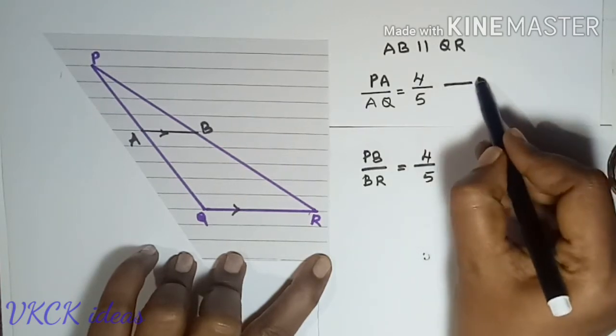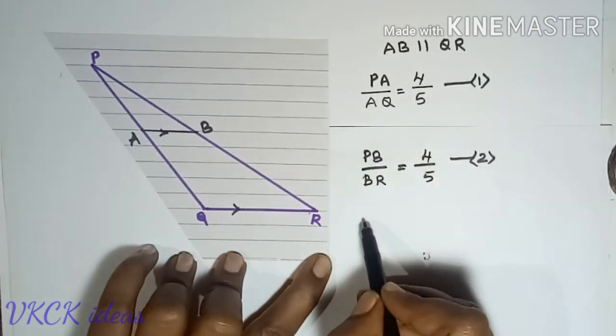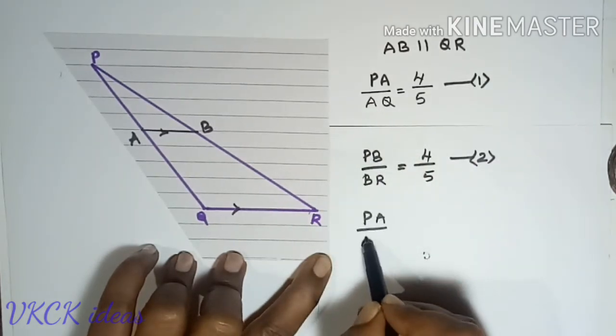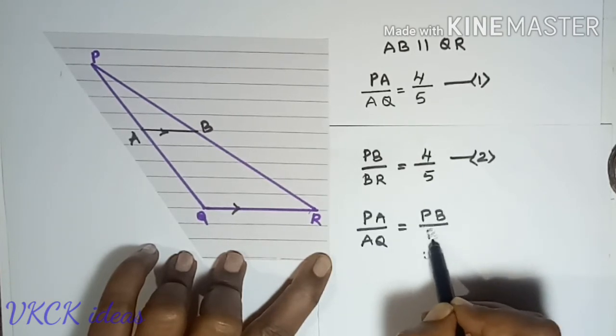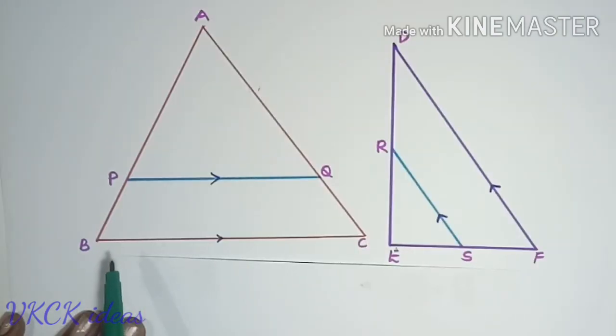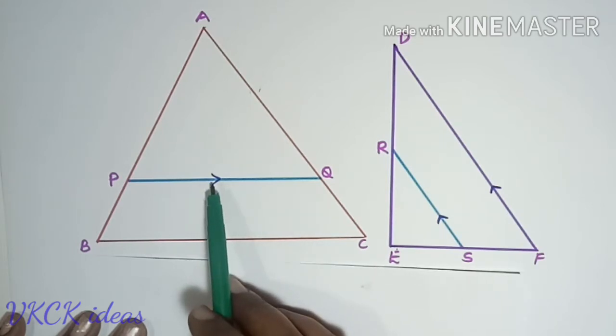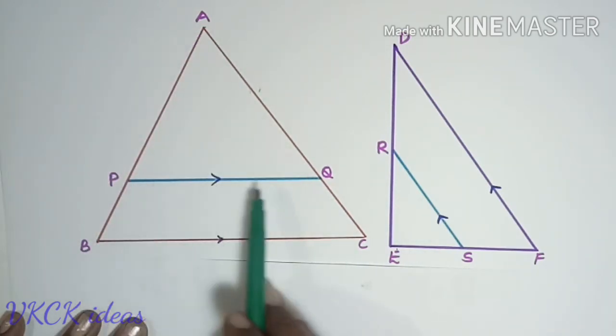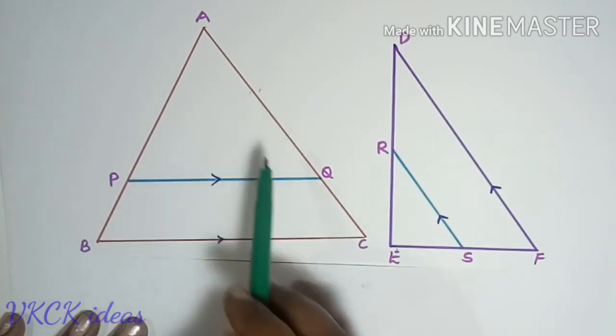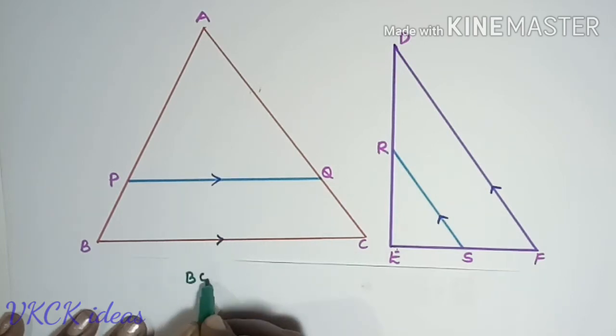Now from 1 and 2 we can come to the conclusion that PA by AQ will be equal to PB by BR. So in any triangle, if a line is drawn parallel to one side of the triangle to intersect the other two sides at two distinct points, the other two sides are divided in the same ratio.